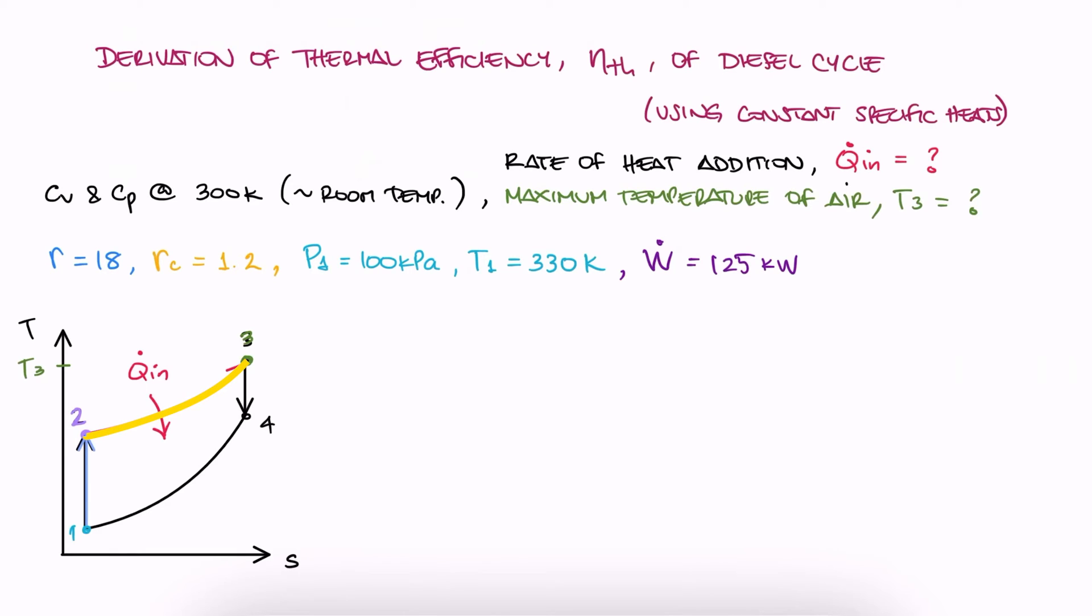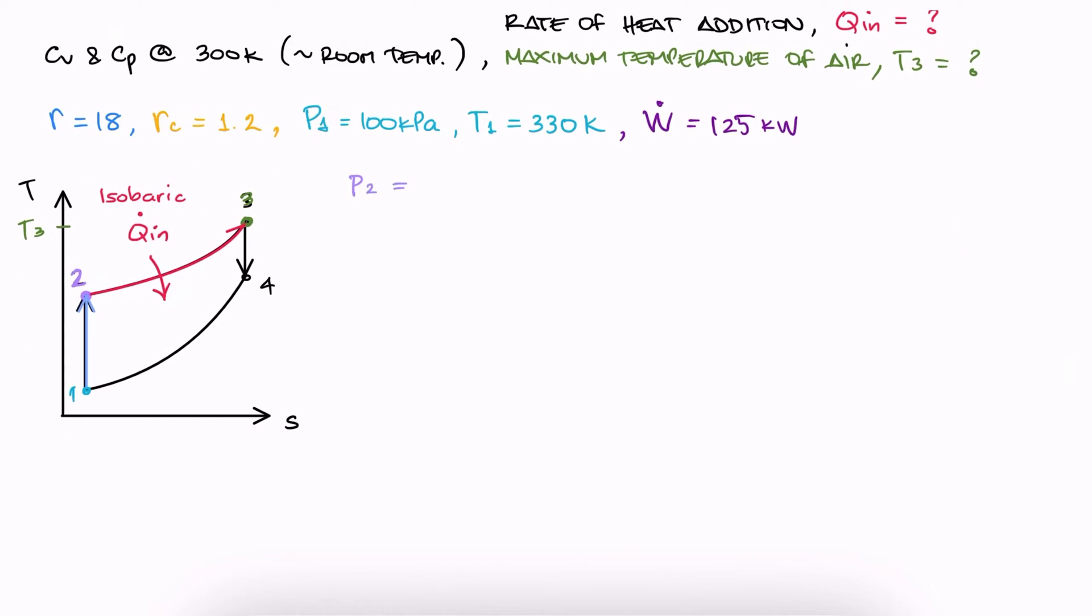Let's do 2 to 3 first. Since we know that the heat addition is isobaric, P2 and P3 are the same. This helps simplify the ideal gas equation to find an expression that gives us T3 in terms of T2 and the volume ratio V3 to V2, otherwise known as the cut-off ratio.